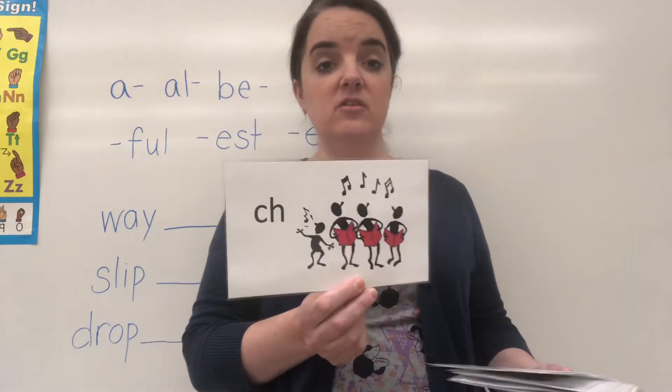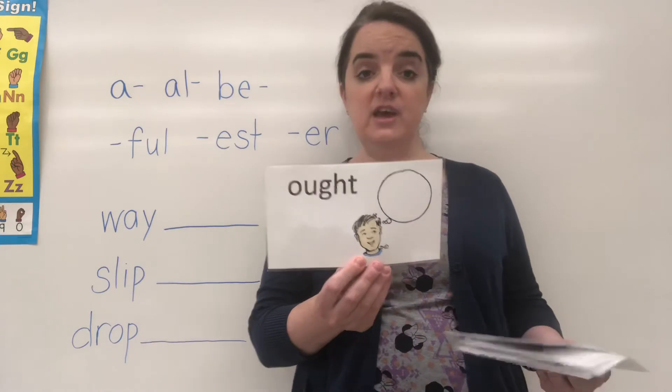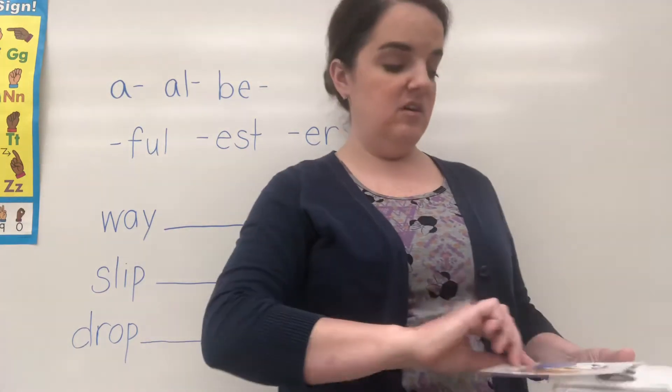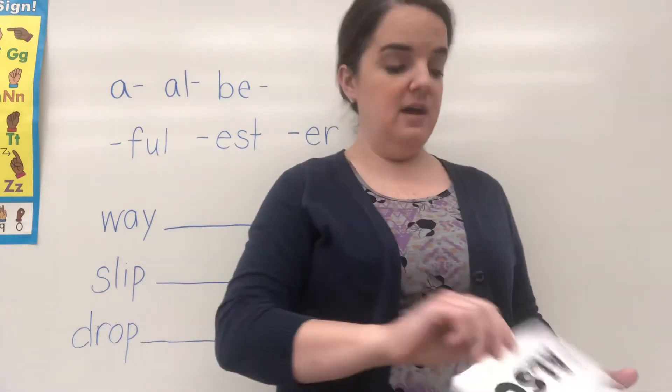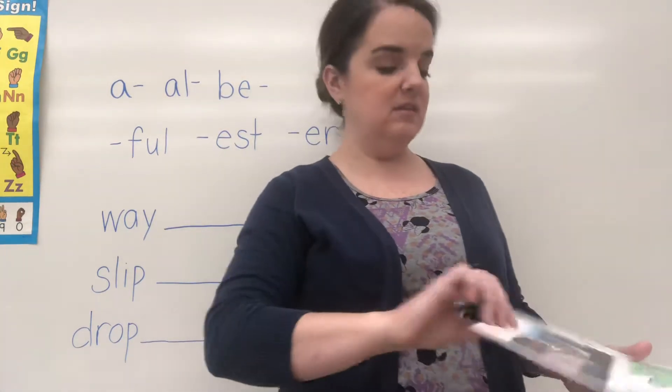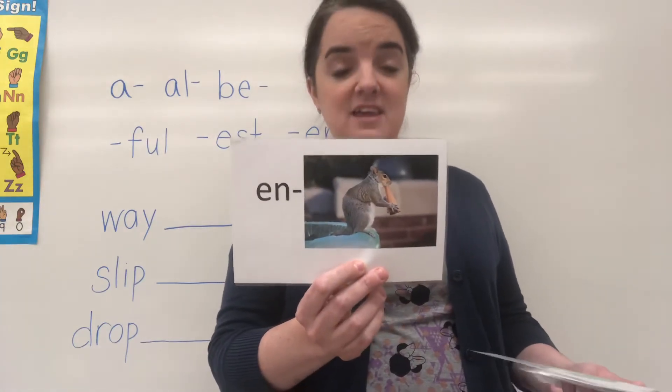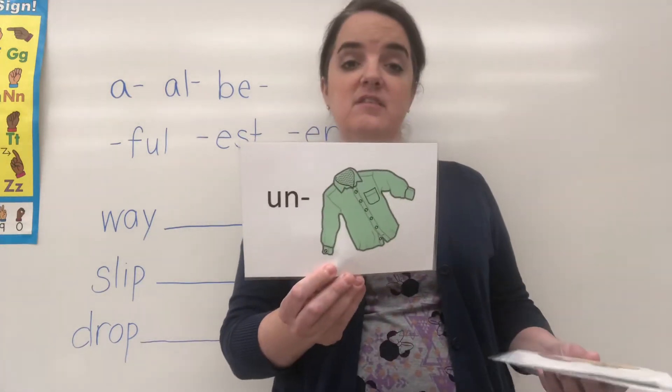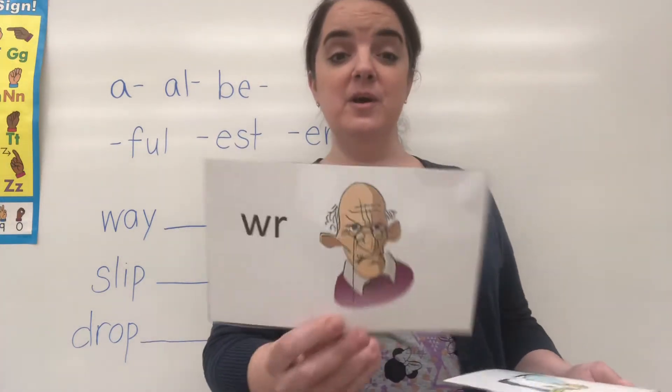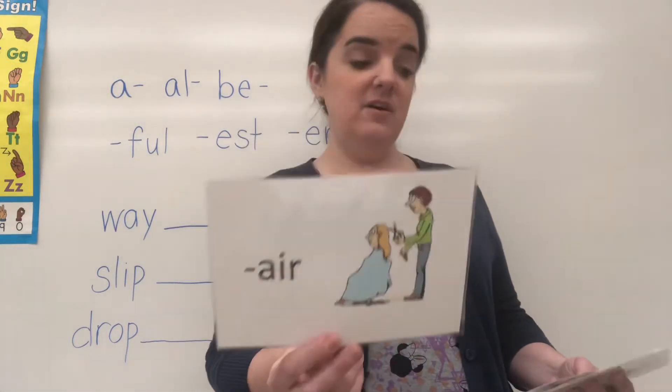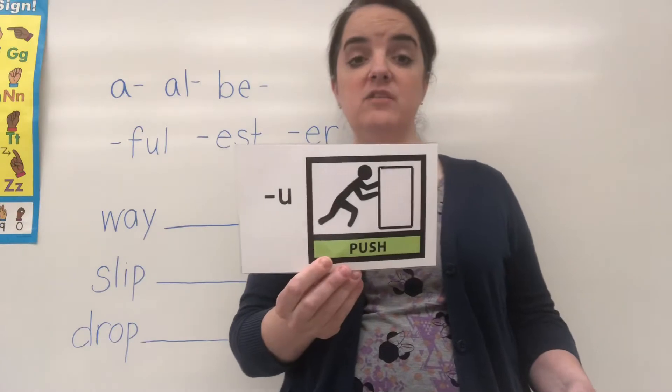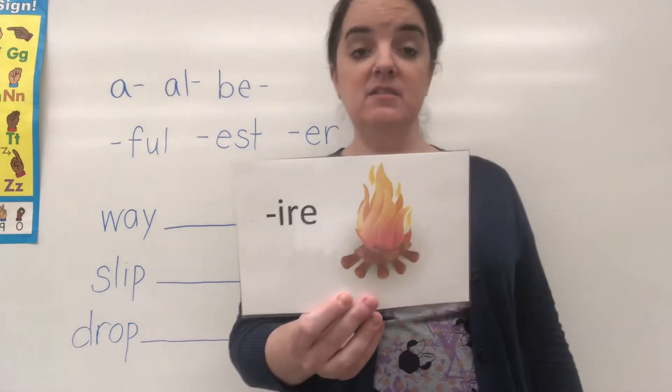CH says k as in chorus. OUGHT says ought as in thought. AUGHT says ought as in caught. A says uh as in asleep. AL says all as in also. BE says b as in because. EN says n as in enjoy. UN says un as in unbutton. WR says ur as in wrinkle. AIR says air as in hair. ARR says air as in carry. U says uh as in push. And IRE says ire as in fire.